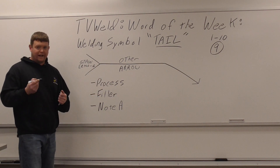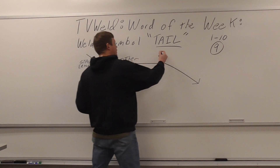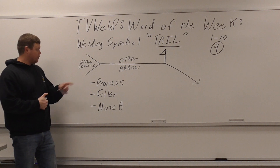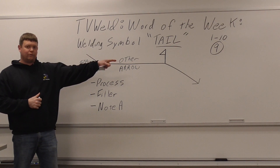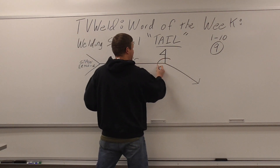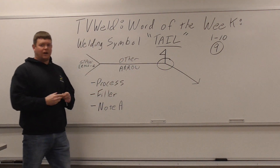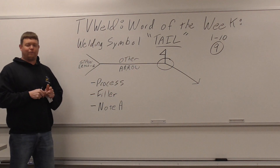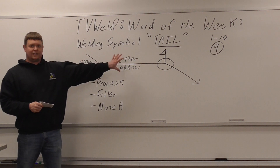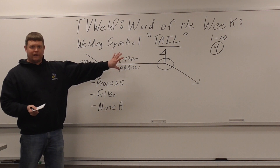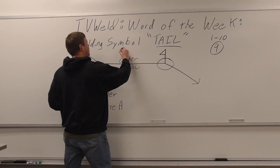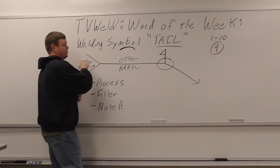For example, if it's a field weld, that already has a place — you put the little flag right here, and you know that's a field weld. So you wouldn't put 'field weld' in the tail because it already has another place on the welding symbol. Similarly, if you were going to weld all the way around, that goes right here — it has its own place. Convex finish also goes right here, so you wouldn't put that in the tail either.